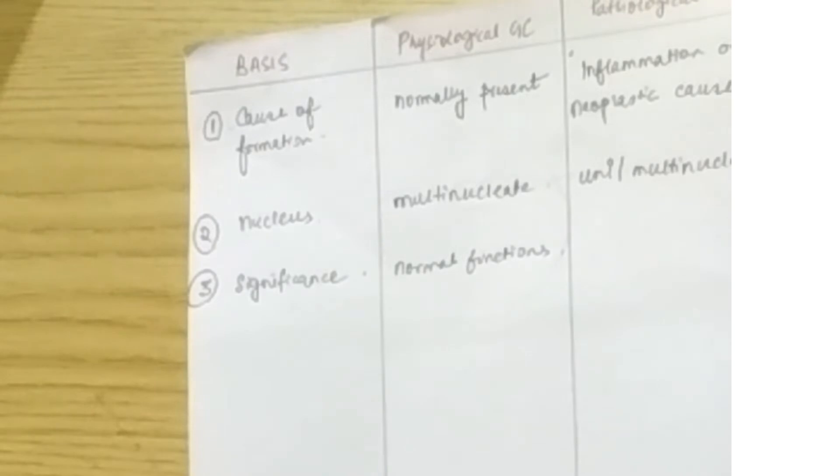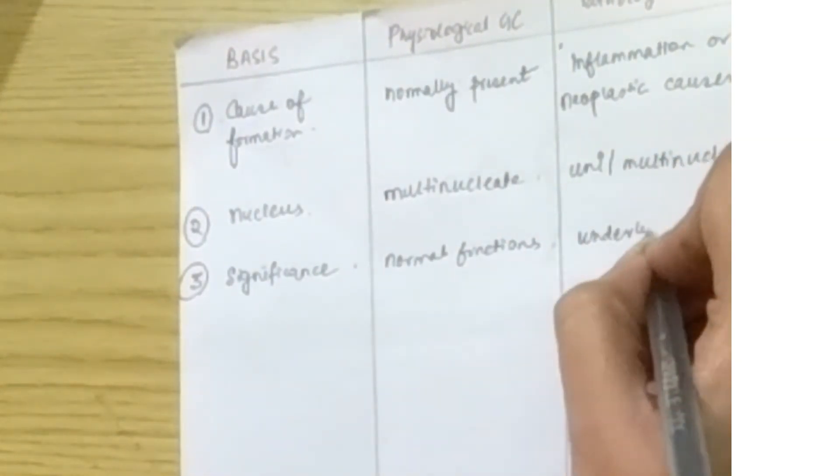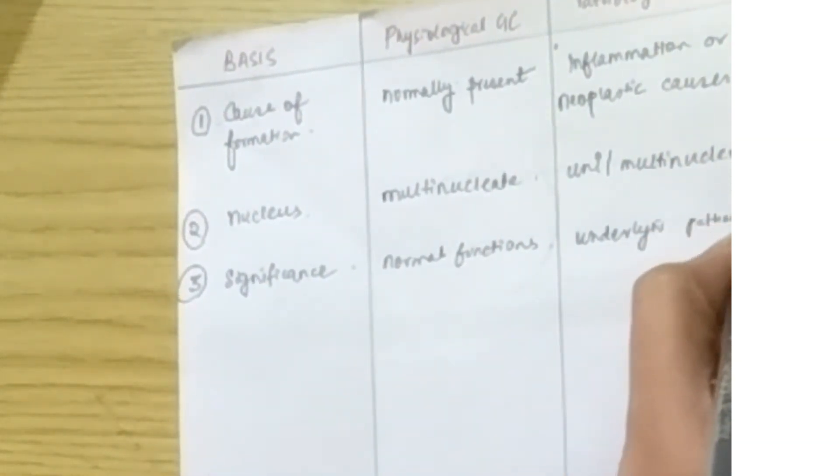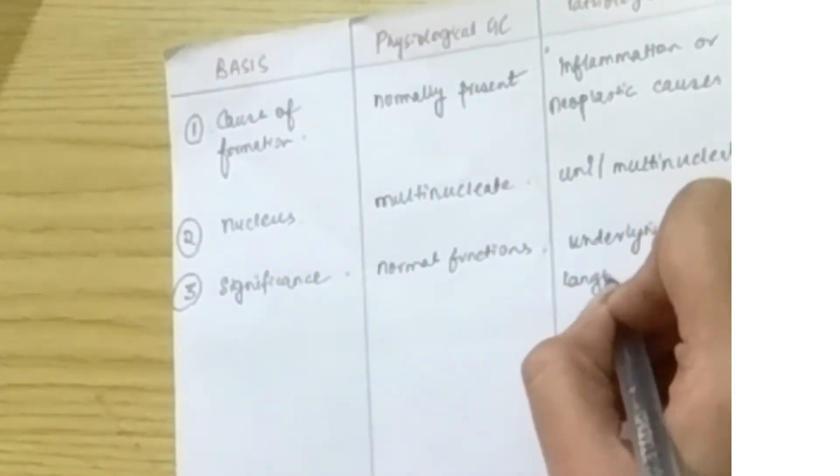But pathological giant cells will have some underlying cause, means they can help you in diagnosis. For example, if Langhans giant cells are present, then they tell you that there is a granuloma formation in case of tuberculosis.